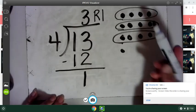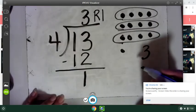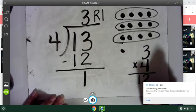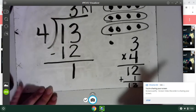Take my quotient, three, and multiply it by the divisor, four. I get 12, and I add the remainder, and I get a total of 13.